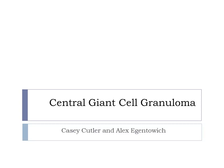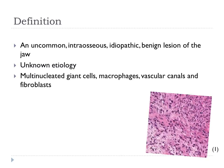Central Giant Cell Granuloma, presented by Casey Cutler and Alex Ihantowich. The definition of Central Giant Cell Granuloma is an uncommon interosseous idiopathic benign lesion that presents in the jaw. This lesion has been thought to be due to a reactive process within the bone, but there is a lack of supporting research for a definite etiology. Therefore, the etiology is unknown.